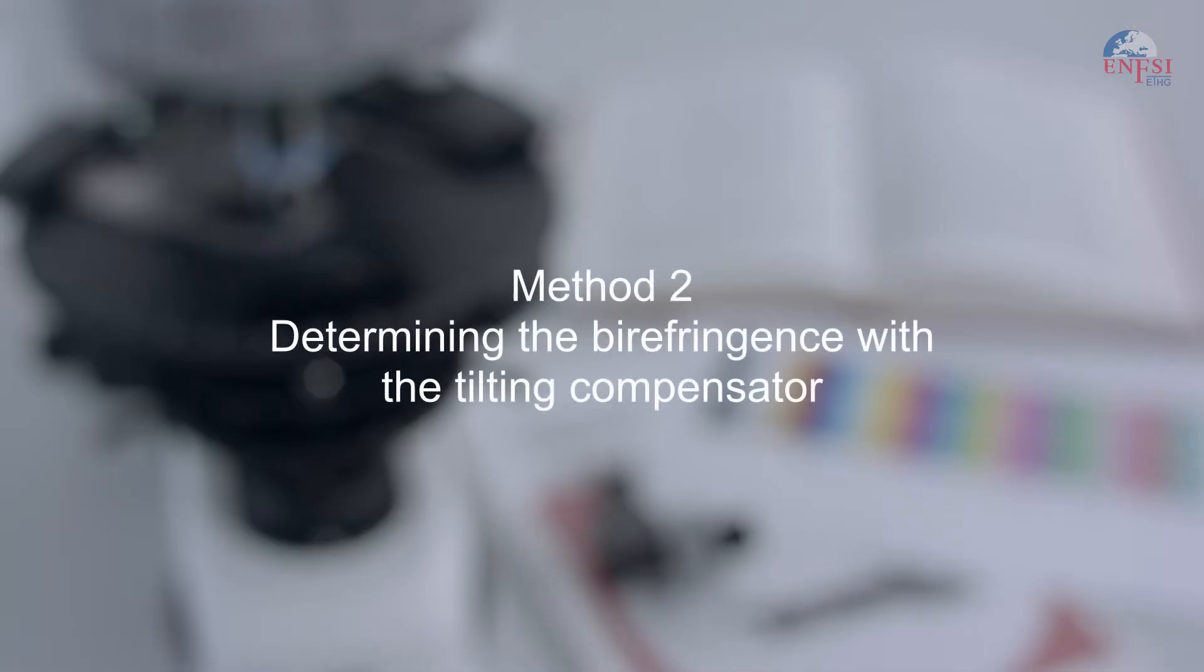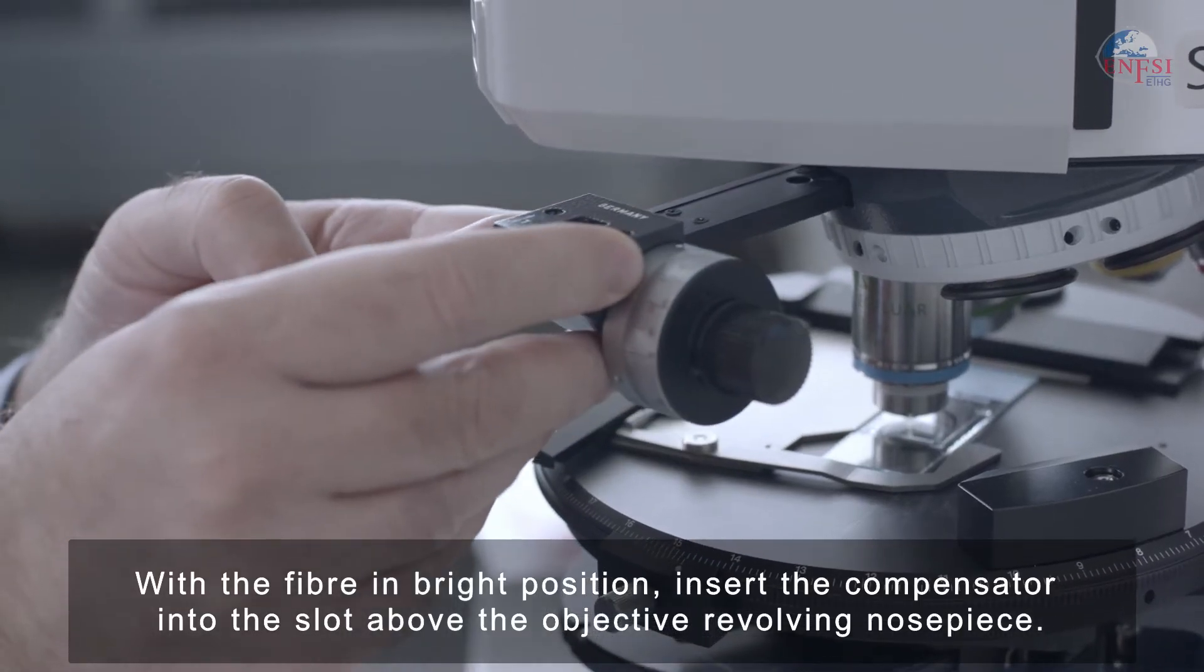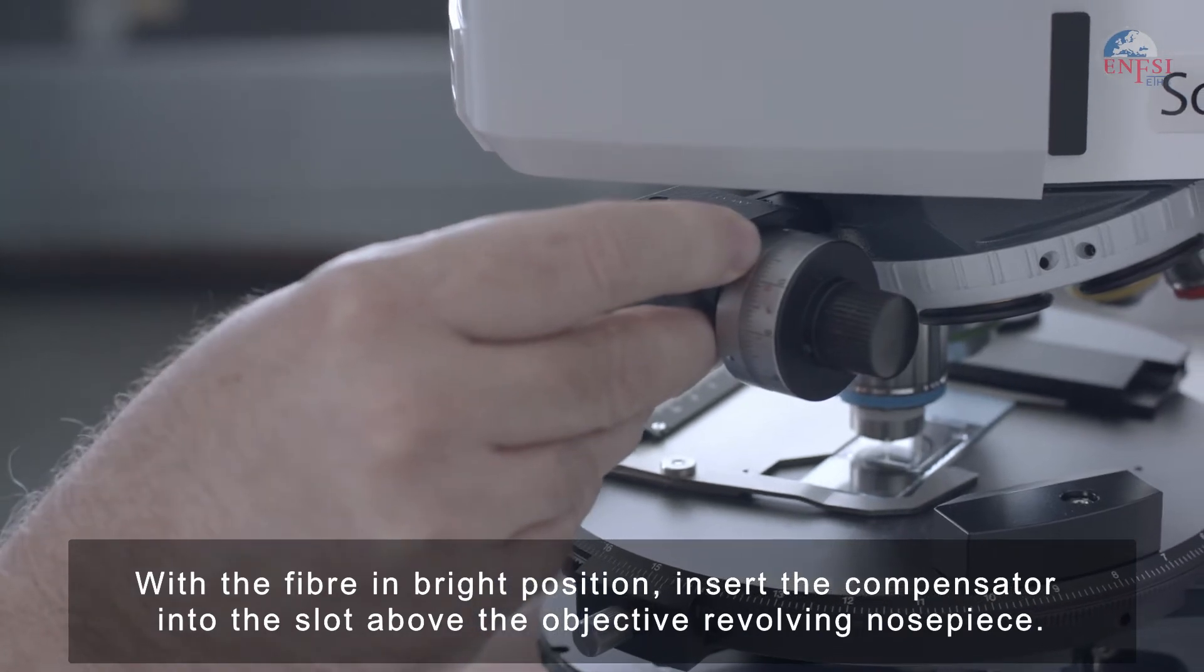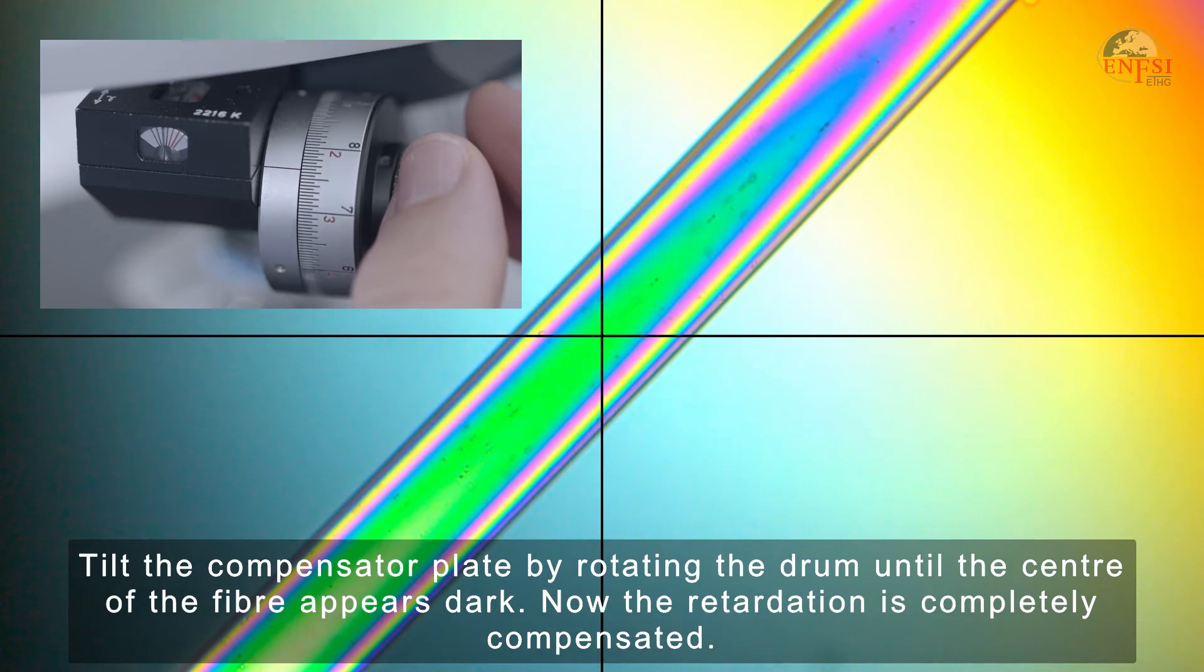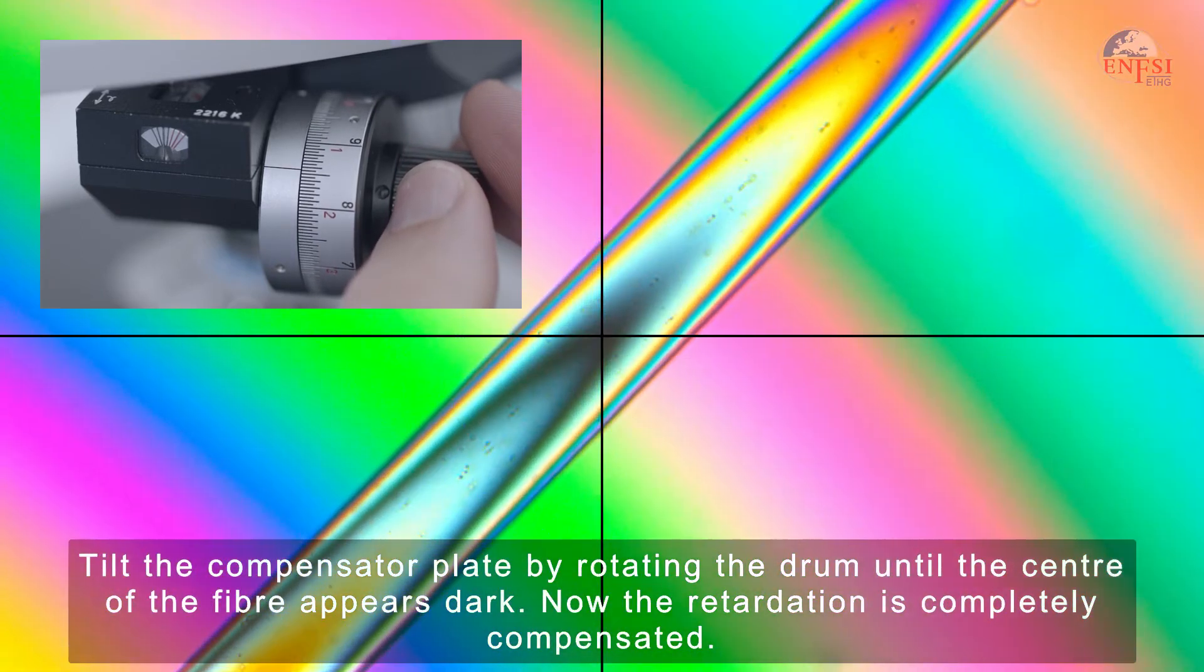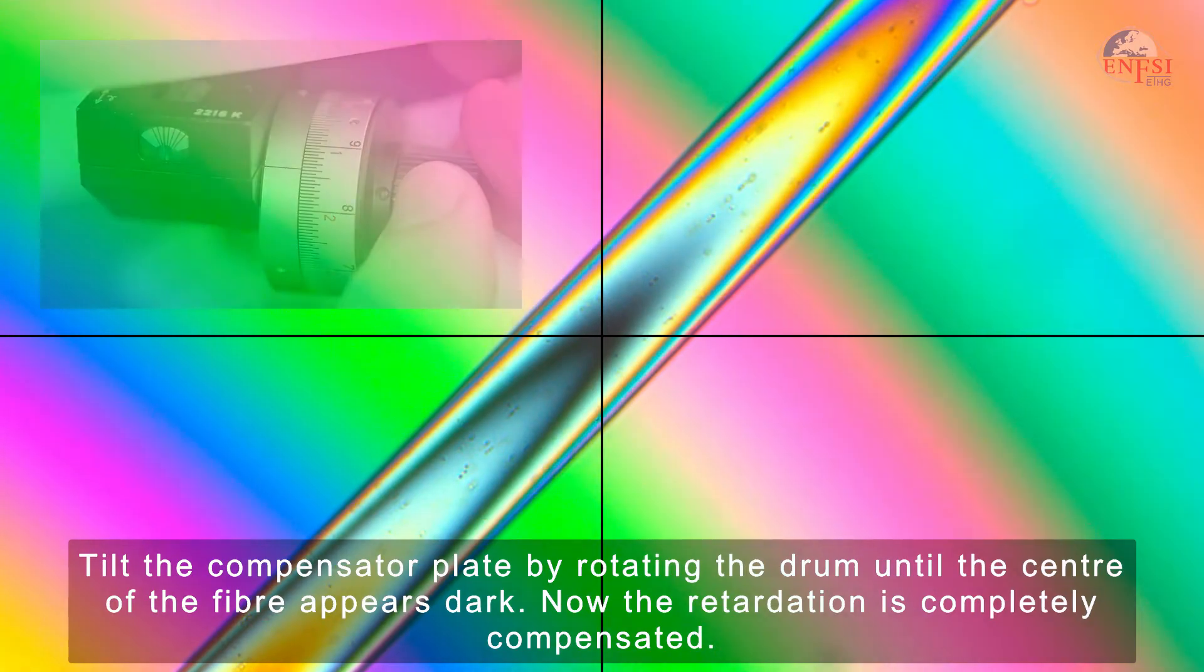Now we will determine the birefringence of the same fiber with the tilting compensator. With the fiber in bright position, insert the compensator into the slot above the objective revolving nosepiece. Tilt the compensator blade by rotating the drum until the center of the fiber appears dark. Now the retardation is completely compensated.